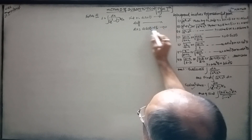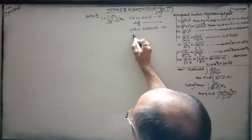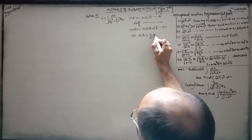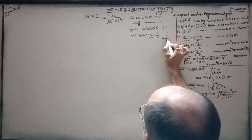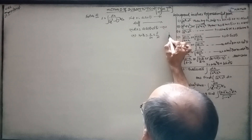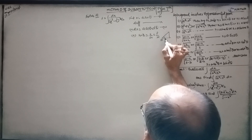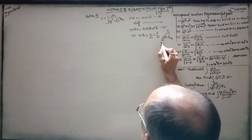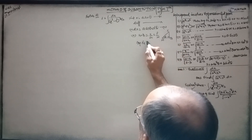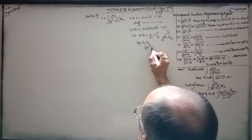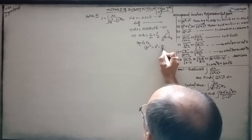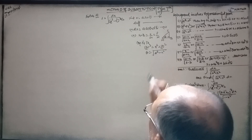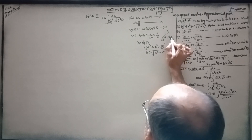Now, x is equal to a·sin(θ), so sin(θ) equals x over a. By the Pythagorean theorem, hypotenuse squared equals perpendicular squared plus base squared. Base is equal to √(a² − x²), and this is x².